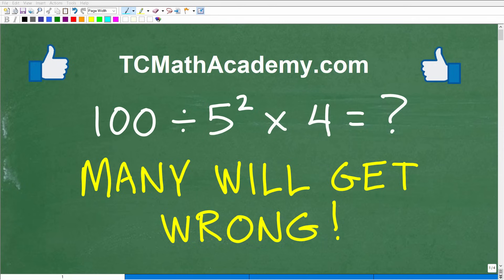Okay, so if you have pretty strong basic math skills, you should be able to do this problem pretty easily without the aid of a calculator. The problem is 100 divided by 5 squared times 4. What is the answer?